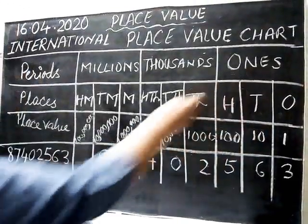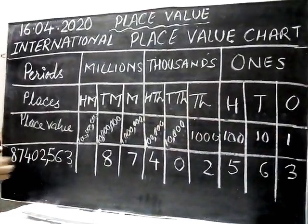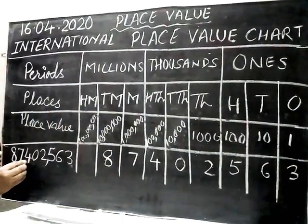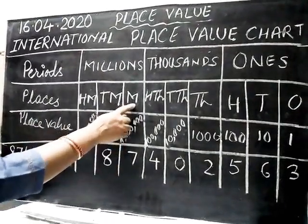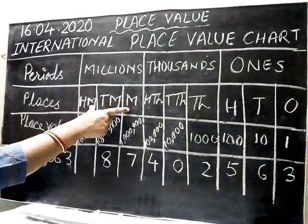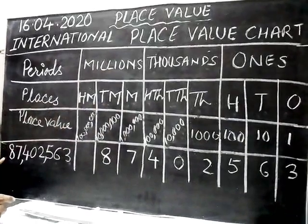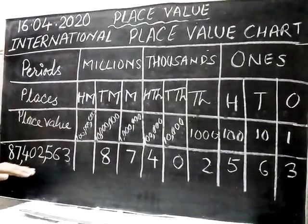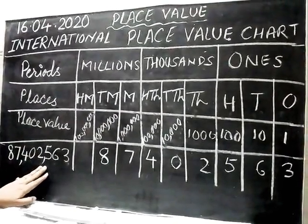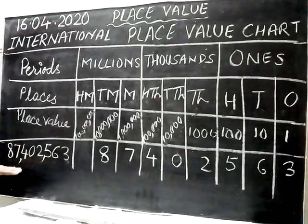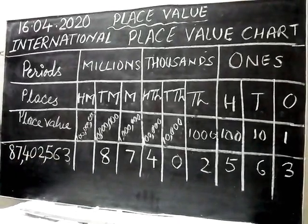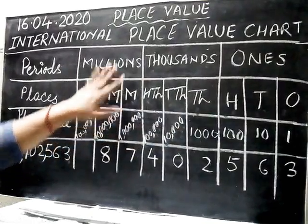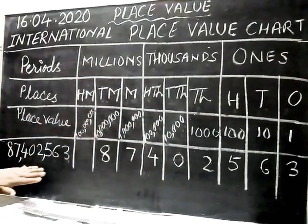So after ones, tens, hundreds — put a comma. This period contains thousands, ten thousands, hundred thousands together. Then million and ten million belong to the same period. So for an 8-digit number, in the international place value chart when we mark the periods it is easy — every period has three places. In contrast, in the Indian system the ones period is common but there is no hundred thousands, and there is no million.